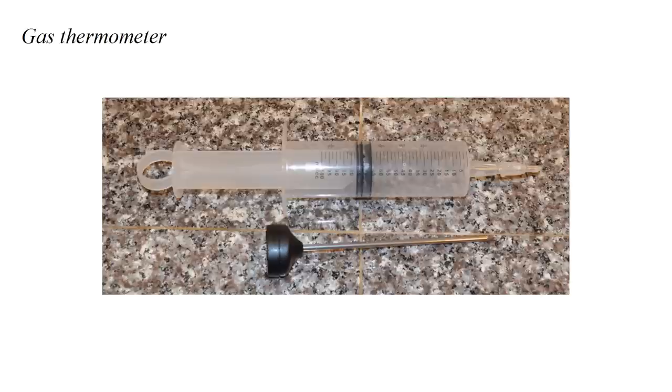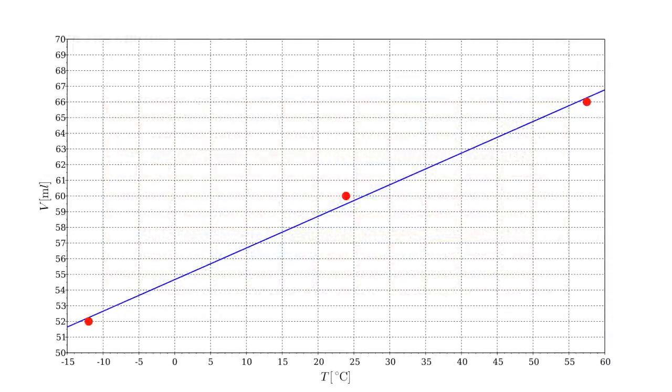Let's do some kitchen science and try to make a gas thermometer using a 100 milliliter syringe, sealed airtight at both ends. For calibration, we'll cheat and use a modern electronic thermometer. At room temperature, about 24 degrees, the syringe volume was 60 milliliters.